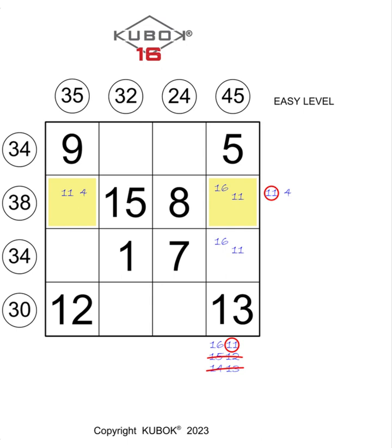The sum of the four numbers in the second line gives 38 as a result. Therefore, by subtracting the numbers 15 and 8, we have that the sum of the two missing numbers is 15, and the only pair of numbers available for this result is only and exclusively 11 plus 4, which we will write on the right of the second line.